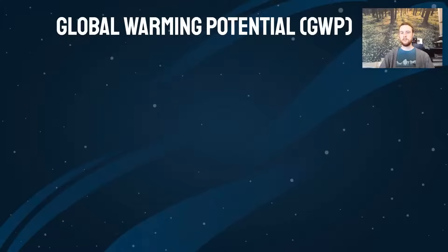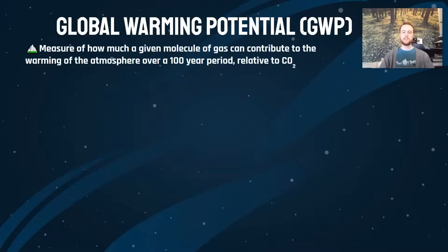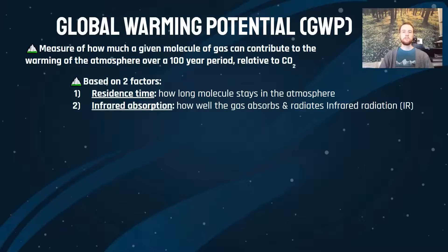The final topic is the potency of each greenhouse gas, or global warming potential (GWP). This is a measure of how much a given molecule of gas could contribute to the warming of Earth's atmosphere over a 100-year period, all relative to CO2, which is set equal to one. GWP comes down to two factors: residence time — how long the gas stays in the atmosphere — and how well the gas absorbs infrared radiation and re-emits it back down to Earth. Different molecular structures give rise to these differences.